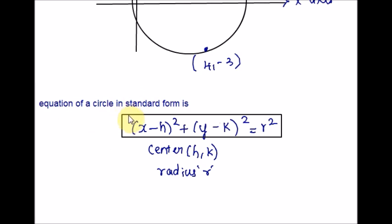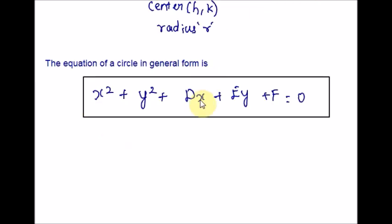Since the information is not enough, I am going to use the general form. Here is the equation of a circle in general form, where d, e, and f are the coefficients. Since the three points of a circle are given, we can use the general form and then solve for d, e, and f.